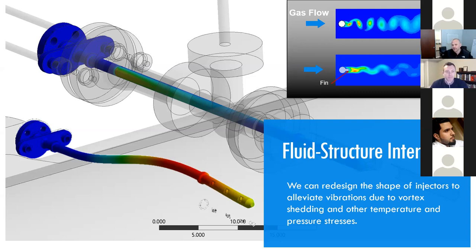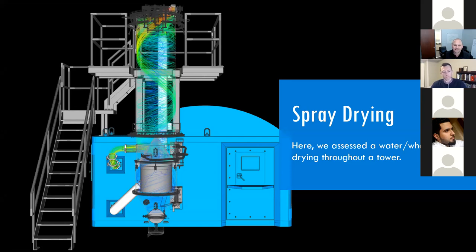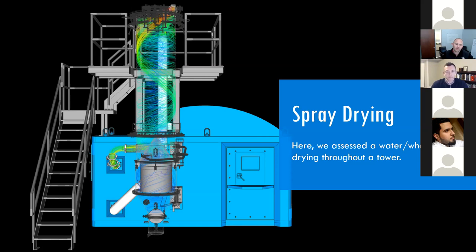Next we go to spray drying — a lot of things are made with it. You can think of Tang, baby formula, protein powders, and many pharmaceutical applications where active ingredients flow through spray dry technology. Drop size is very important — typically you're spraying a slurry, you have your active ingredient and a carrier. The carrier comes through and you need a small droplet so that it evaporates out, giving you a nice fine, dry, consistent powder at the end.